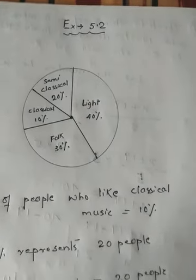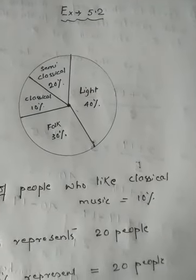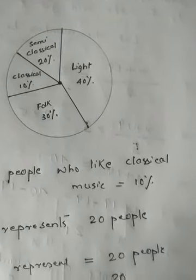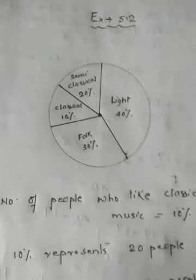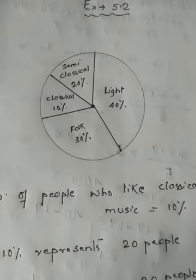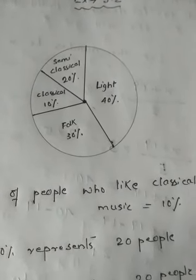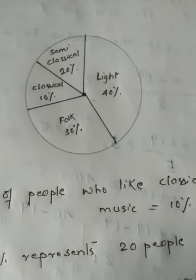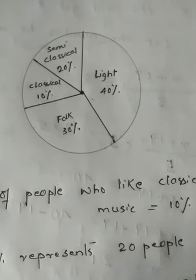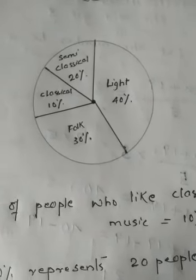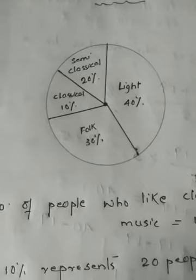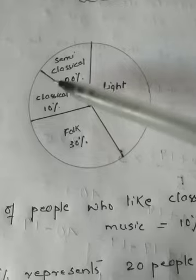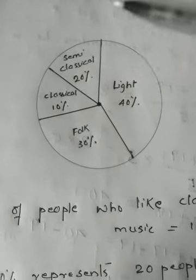Today we'll start Exercise 5.2, and today we'll do question number one. This chapter is entirely related with pie charts. I have not written the question — I will read it out for you. According to question one, a survey was made to find the type of music that a certain group of young people liked in a city. The adjoining pie chart shows the findings of this survey.